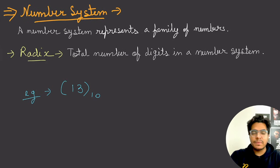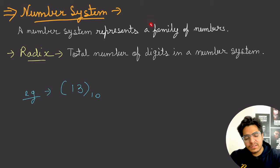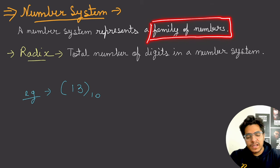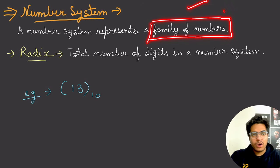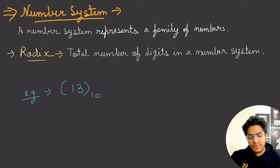Let's talk about number systems. A number system represents a family of numbers. The main number systems are hexadecimal, octal, binary, and decimal — and these are all number systems.